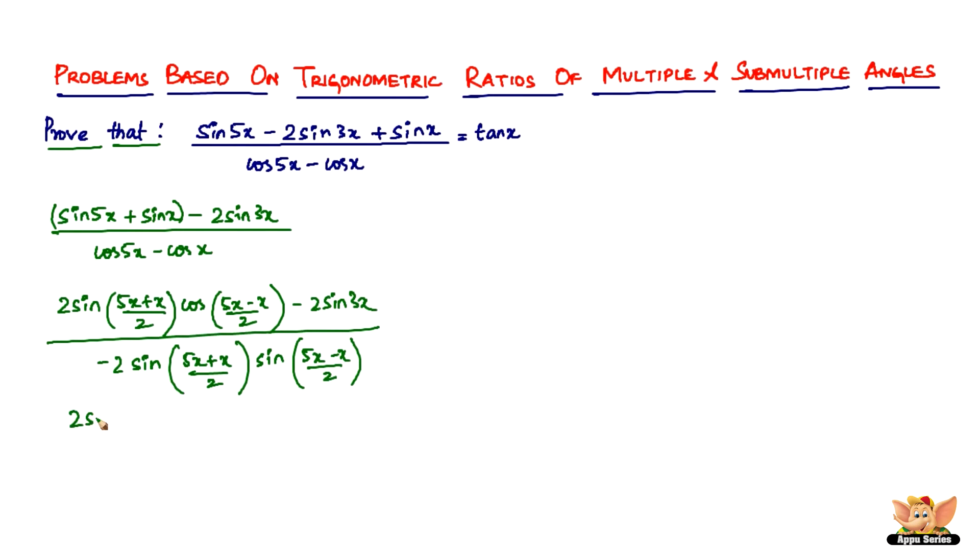Solving the above steps, we get 2 sine 3x cos 2x minus 2 sine 3x divided by minus 2 sine 3x sine 2x. So here we get it.